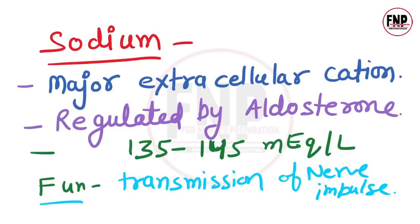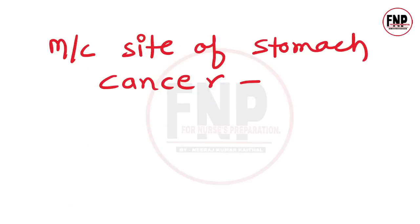Sodium hamare sharir ka ek important electrolyte hai — ise major extracellular cation ke roop mein jaana jata hai. Sodium ka regulation aldosterone karta hai. Normal level 135–145 mEq/L hota hai. Sodium ka important function hai nerve impulses ka transmission karvana. Stomach cancer sabse zyada antrum part mein hota hai.